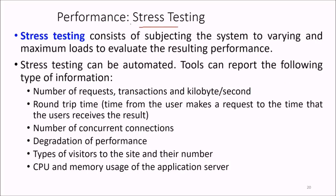Stress testing subjects the system to varying and maximum loads to evaluate the resulting performance. Stress testing can be automated with tools that report metrics such as number of requests, transactions in kilobytes per second, round-trip time from when the user makes a request to when they receive the result, number of concurrent connections, and when performance degradation begins. Results also include user counts and CPU and memory usage of the application server.